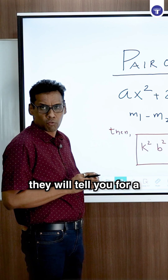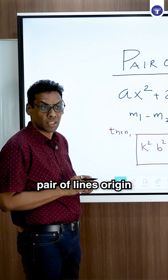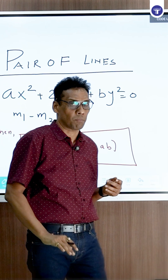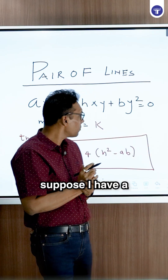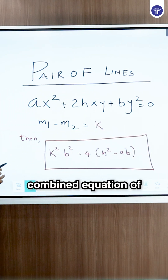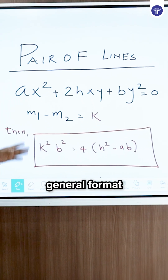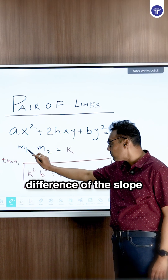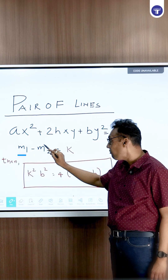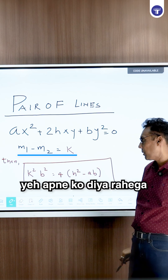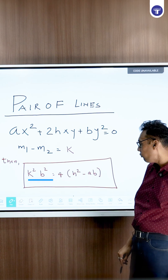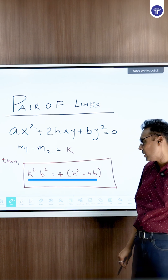They will tell you, for a combined equation of pair of lines, the difference of the slopes is something — say 2, 3, or 4. Suppose I have a combined equation of a pair of lines through the origin. The general format is ax² + 2hxy + by² = 0. And the difference of the slopes, suppose m1 minus m2 is k. Then the condition is k²b² = 4(h² - ab).